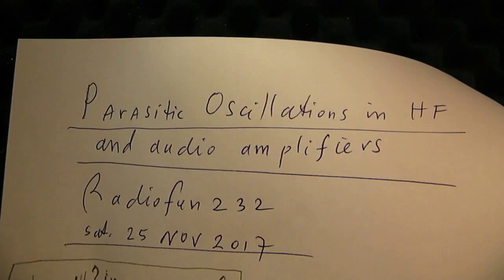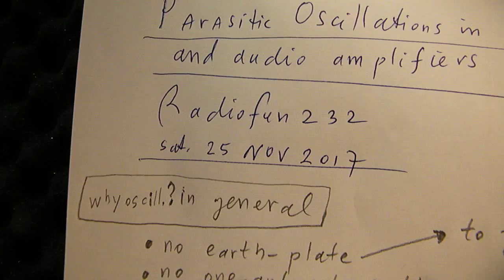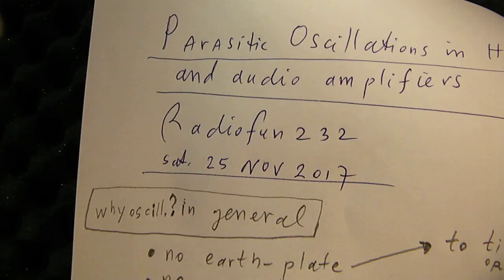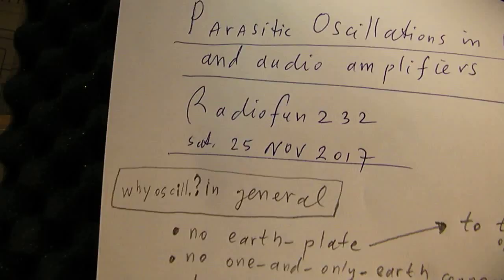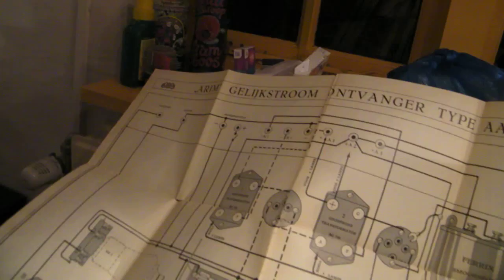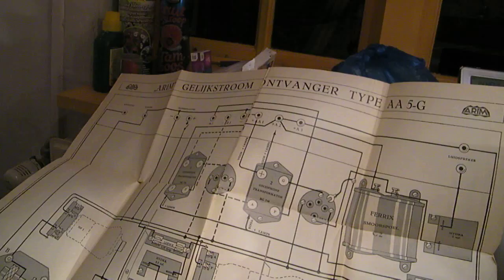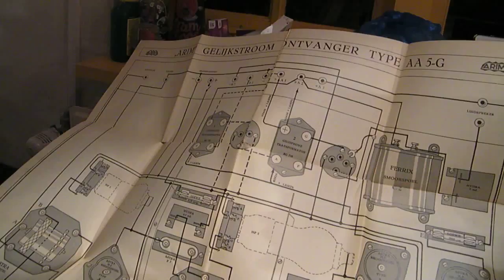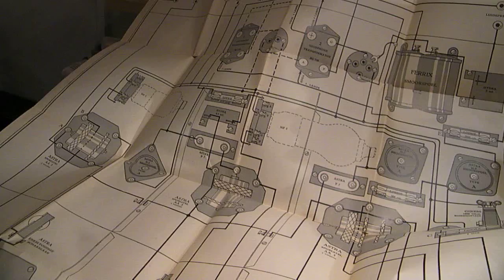There are a lot of problems when you want to homebrew electronic circuits in audio or in radio applications. Here you see a radio application from the 1920s. Here again one big layout from radio applications, a radio receiver from the 1920s. I want to explain that later.